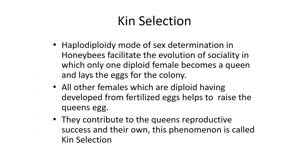Kin selection is a type of natural selection and an evolutionary strategy to facilitate sociality among honeybees, in which only one diploid female becomes a queen and lays eggs for the colony. All other females, which are diploid and developed from fertilized eggs, help to raise the queen's eggs. They contribute to the queen's reproductive success and their own. This phenomenon is called kin selection.